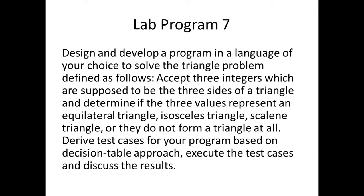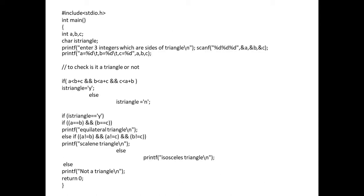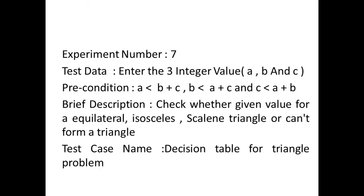So here we will use one more testing process — that is the decision table approach. Now let's see how to write test cases using the decision table approach. You can look into the program; the same explanation is given in lab program one video. Here you are just not including any boundary while inputting the values for the three sides of the triangle — that is the only difference.